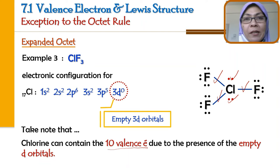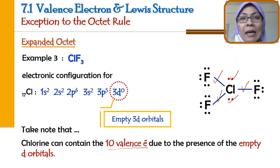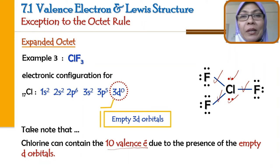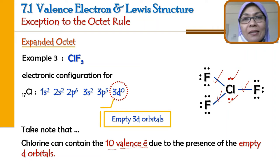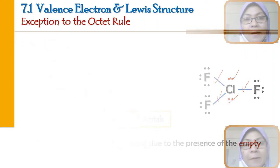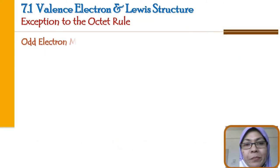Expanded octet hanya ditunjukkan oleh elemen-elemen yang berada dalam Period 3 dan ke atas, kerana mereka boleh expand octet dengan menggunakan empty d-orbital.